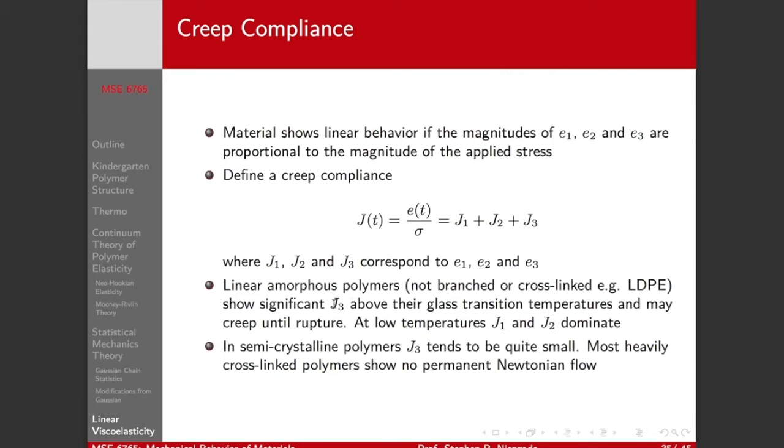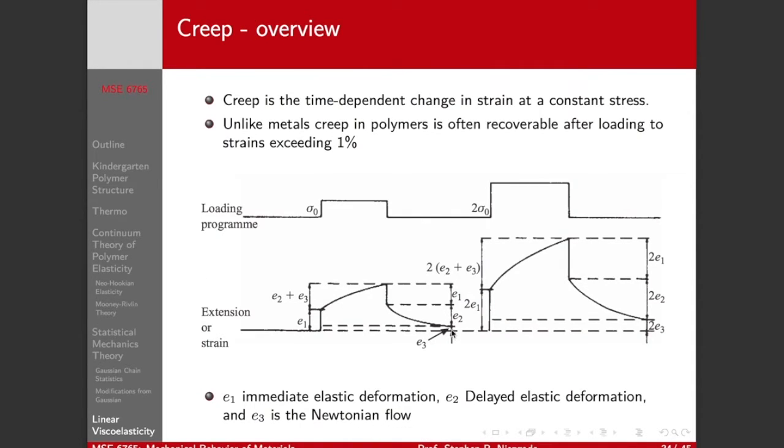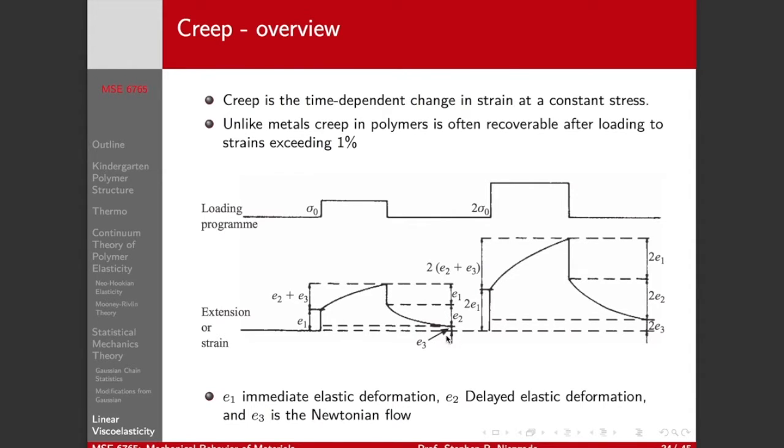So we can consider it as the superposition of these different loading regimes. Linear amorphous polymers, ones that are not cross-linked or branched, low-density polyethylene, can show significant creep compliance. Significant Newtonian flow. So that means J3 here tells you the amount of strain due to Newtonian flow. Above their glass transition temperatures, they may creep until creep rupture occurs. At lower temperatures, the J1, the initial elastic response, and J2, the time-dependent creep response, time-dependent but recoverable creep response is going to dominate. In semi-crystalline and highly cross-linked polymers, J3 tends to be quite small, and you're not going to see permanent Newtonian flow in these materials.